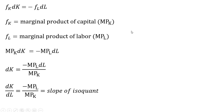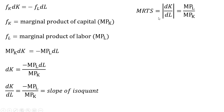Because we define the marginal rate of technical substitution as the absolute value of the slope of the isoquant, we just lose the minus sign. So the marginal rate of technical substitution is simply the ratio of the marginal products.